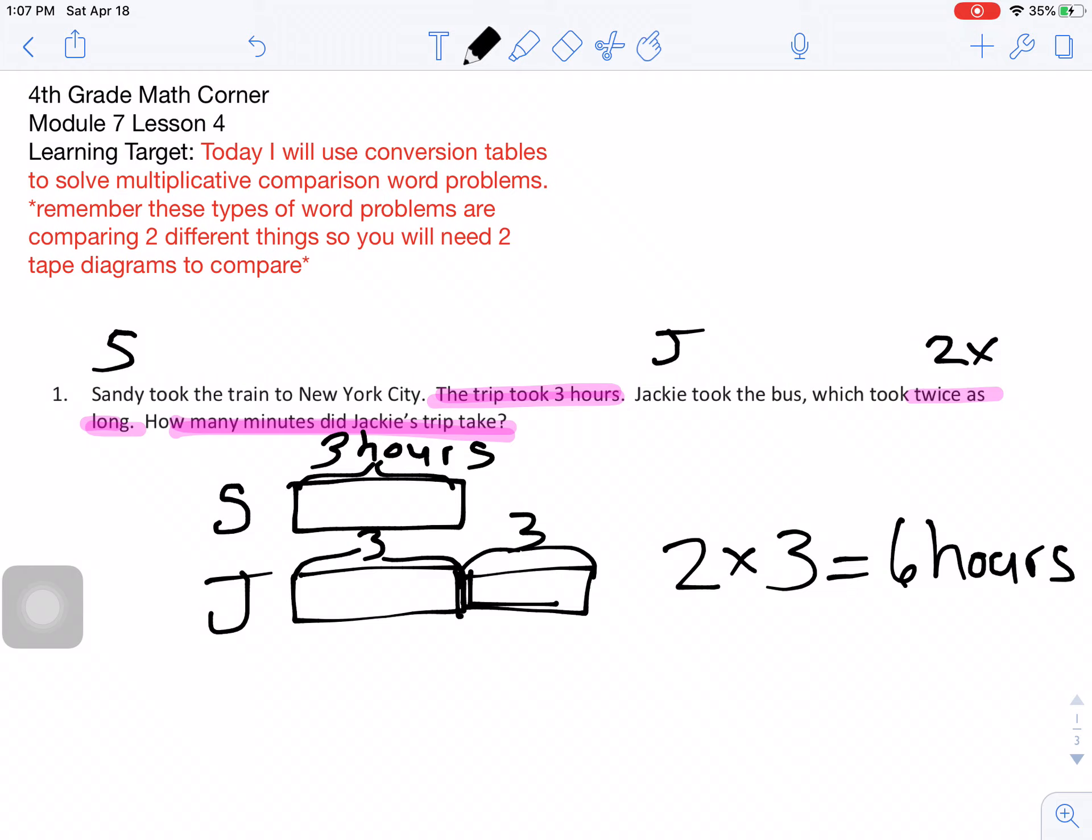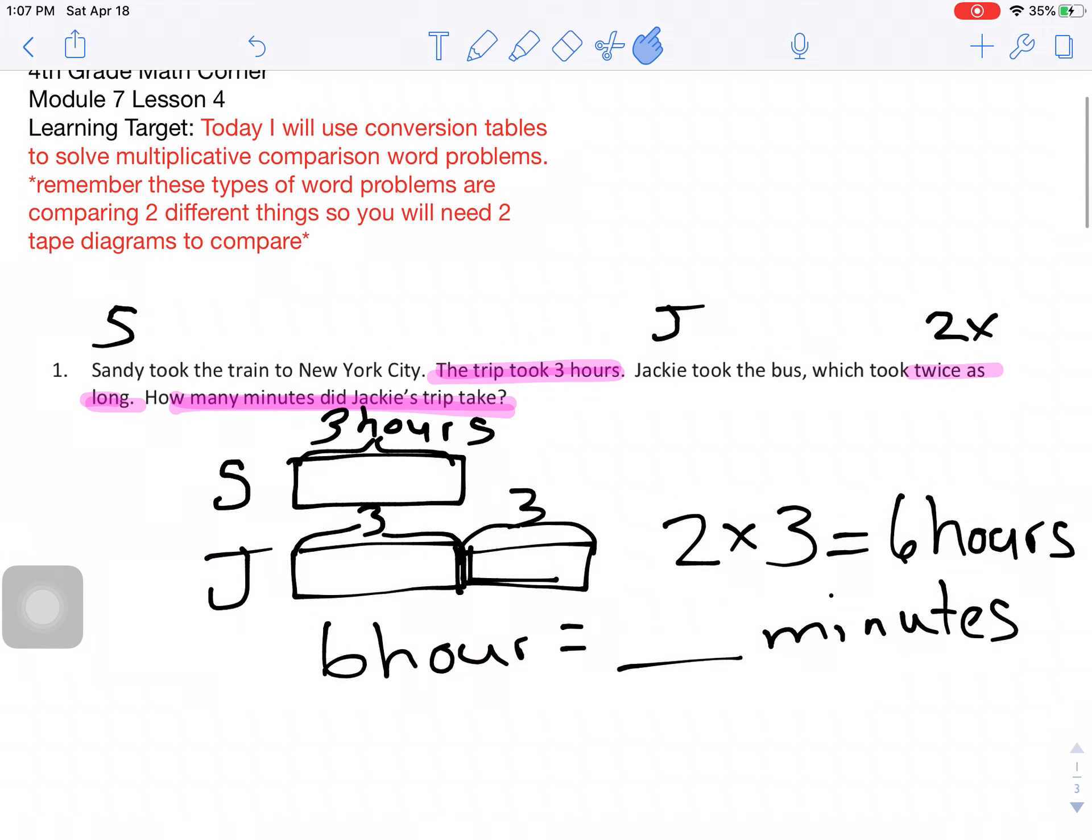Well, I know that I can go from hours, which are big, to minutes, which are small, by repeatedly adding how many minutes are in one hour or multiplication. So do you remember there are 60 minutes in one hour? So I could add 60 six times, or I could just go 60 times six.